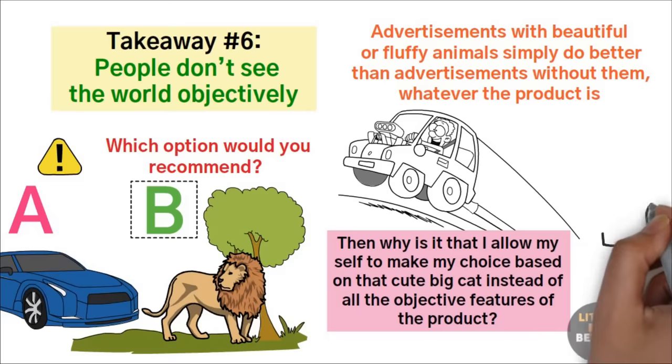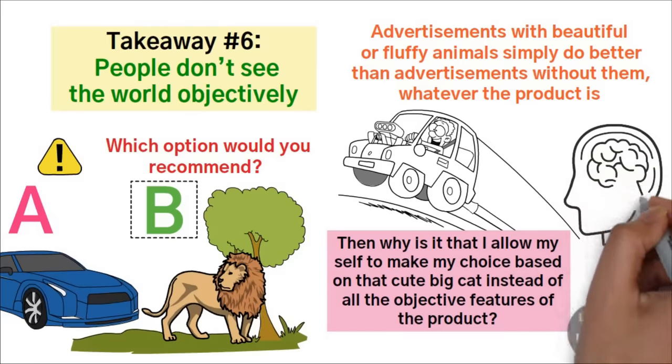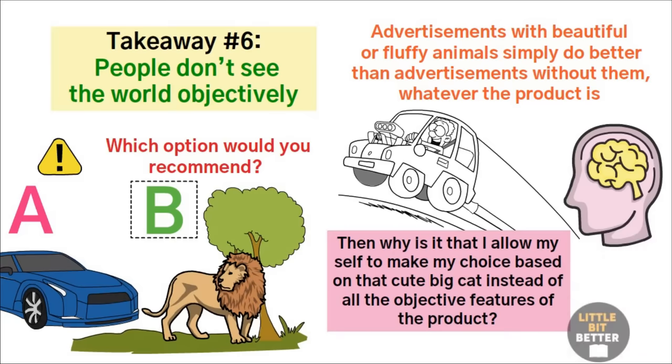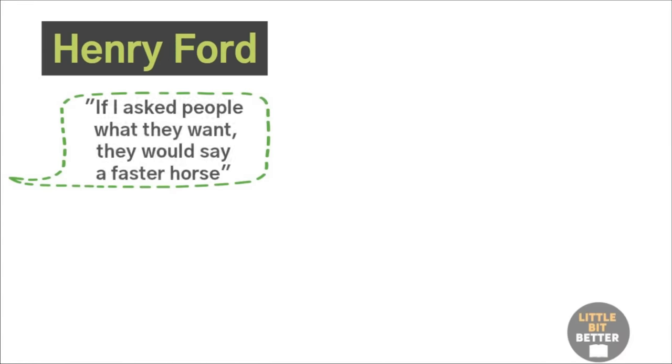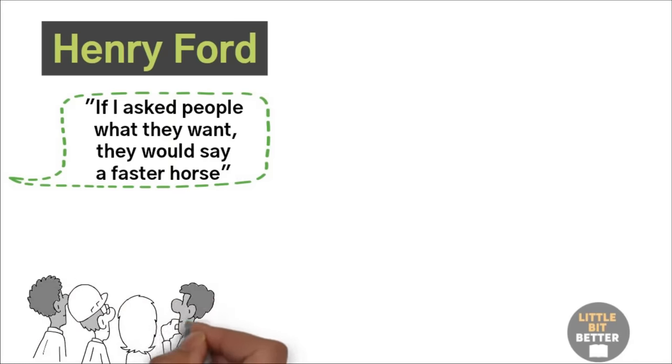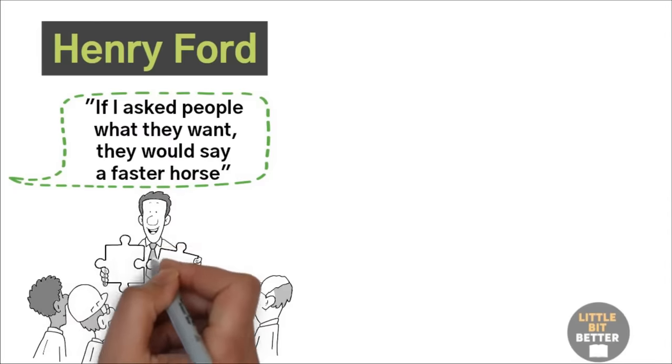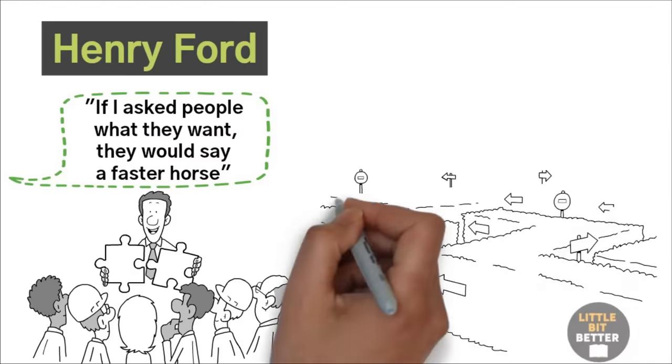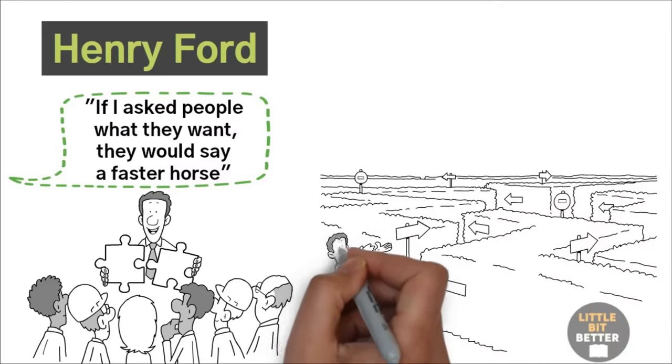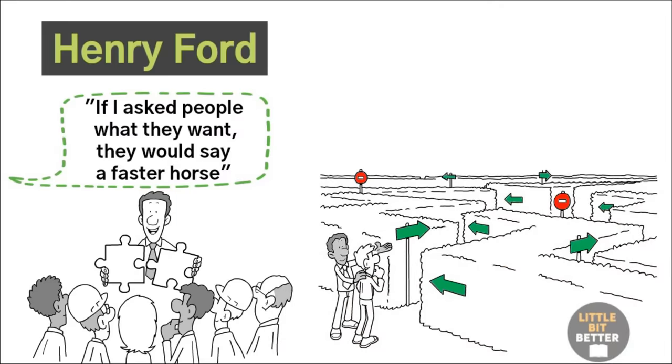The reason has to do with your unconscious mind. We do things for reasons that we consciously know nothing about. If you ask someone why they're doing something, they will obviously give you a reason. But that doesn't mean that is the actual reason. The founder of the Ford car company, Henry Ford, once said, if I asked people what they want, they would say a faster horse. We assume that people perceive the world objectively and that people see clearly and think logically all the time. But that is just not true. We don't see the world as it is. We see the world according to what it means to us. Subjective experiences are valuable and can be as important as objective data in making decisions.